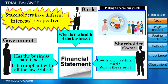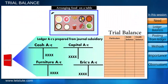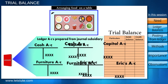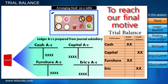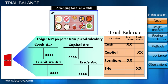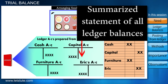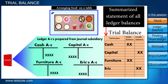To meet the needs of our stakeholders and all interested parties, it is important to first arrange all the different ledger balances on one sheet — like arranging the food on the table. That is why we prepare a trial balance, which is a summarized statement of all the ledger balances.